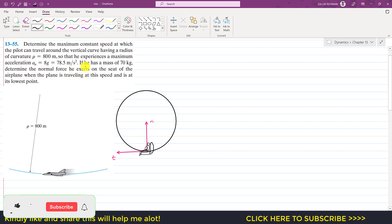Hello students, welcome to Engineers Academy. Kindly subscribe my channel if you haven't subscribed it yet. Now let's solve this particular problem which says that determine the maximum constant speed at which the pilot can travel around the vertical curve.